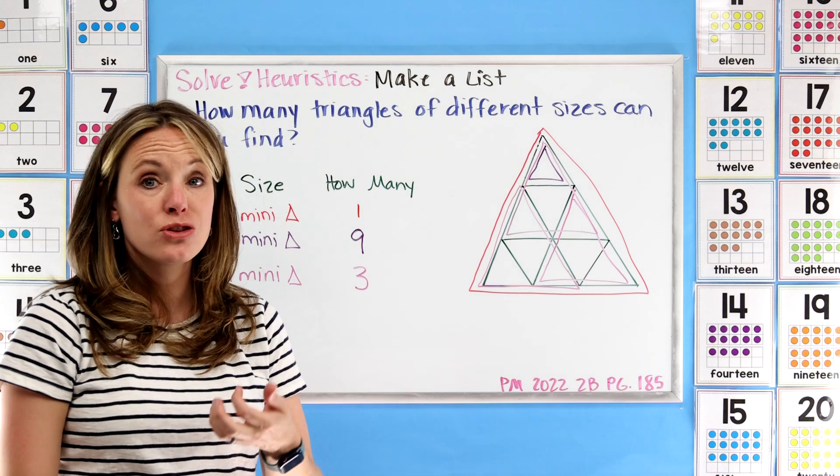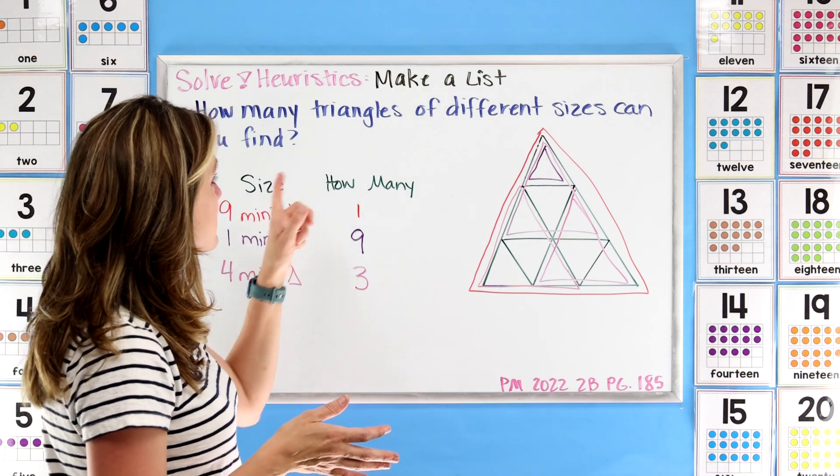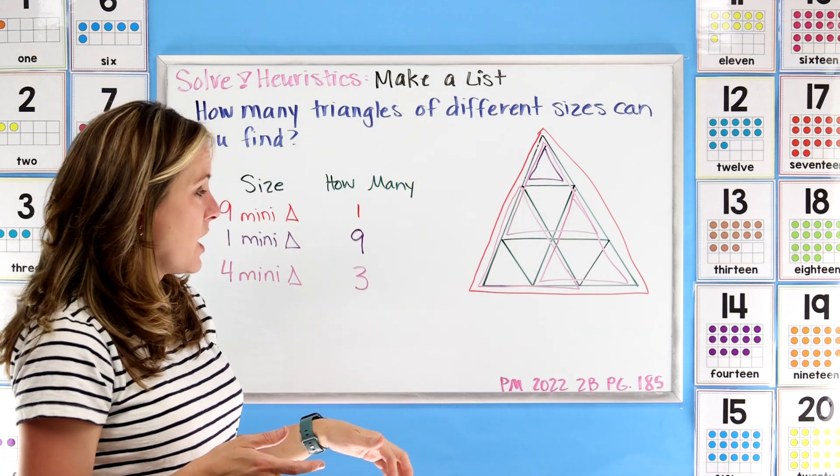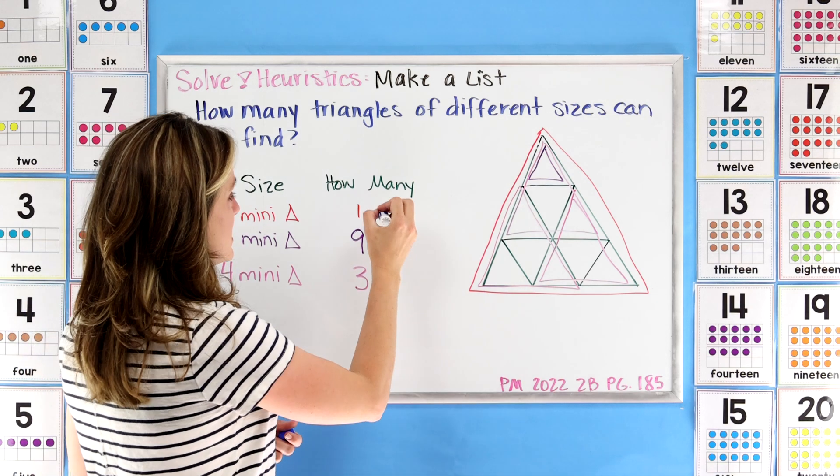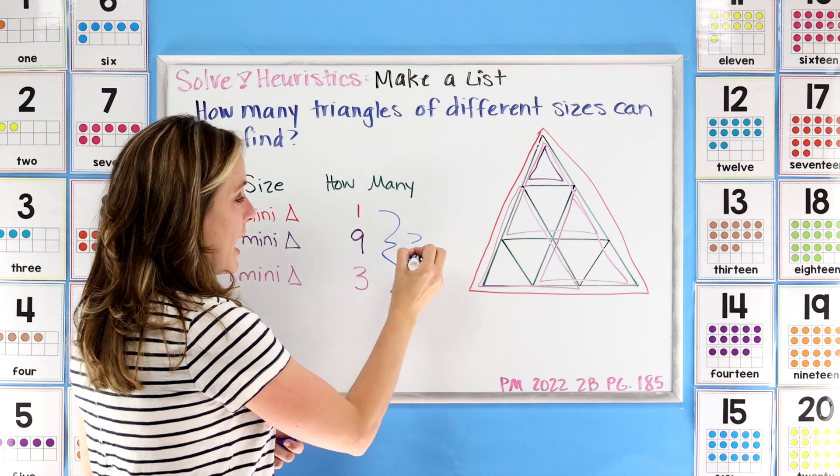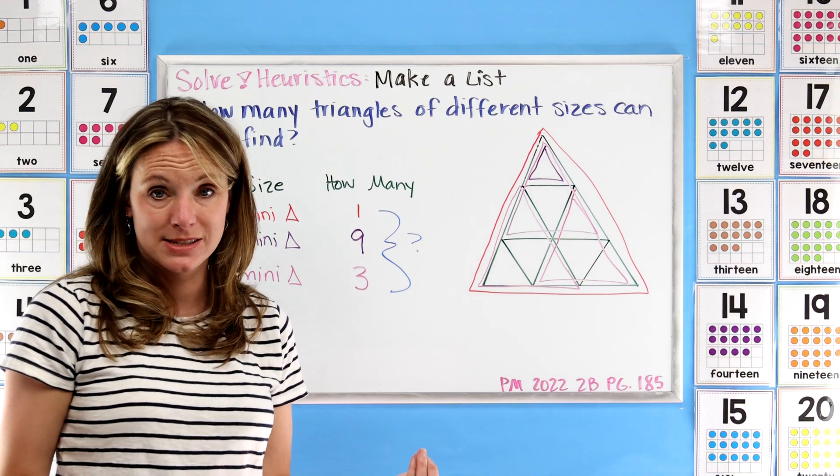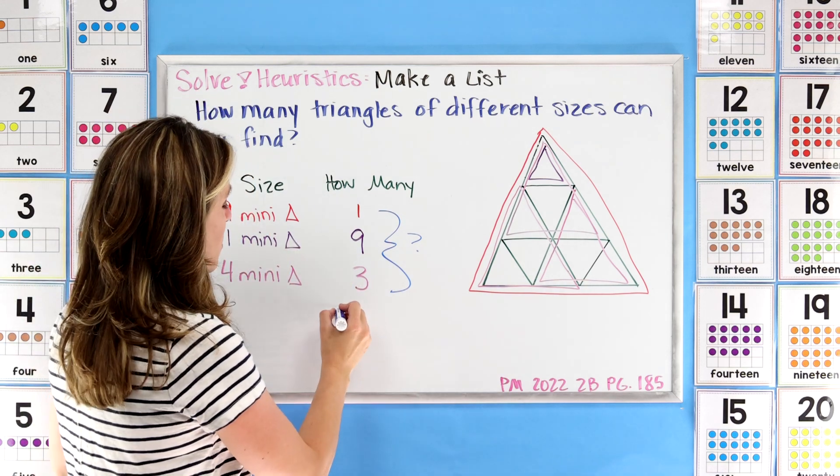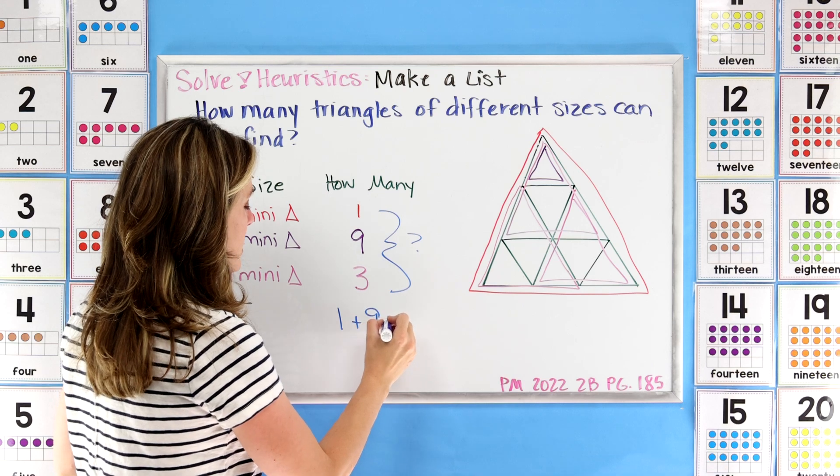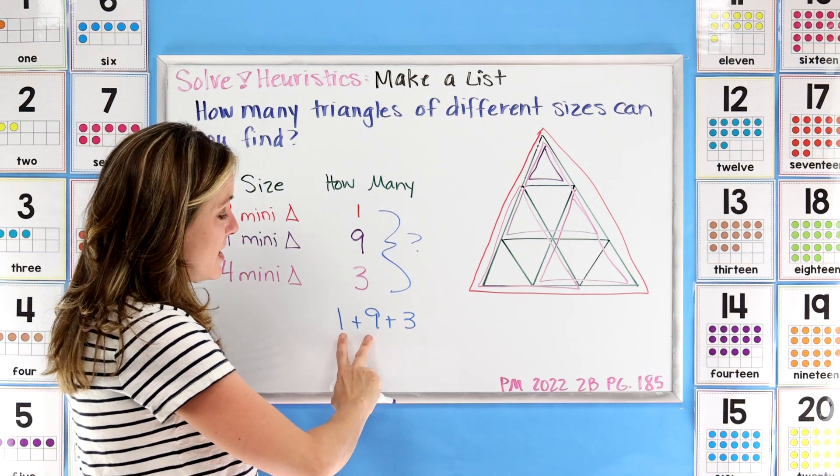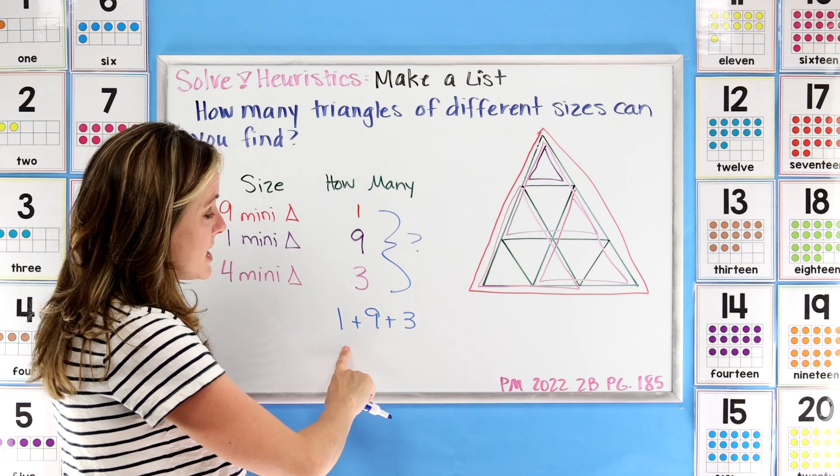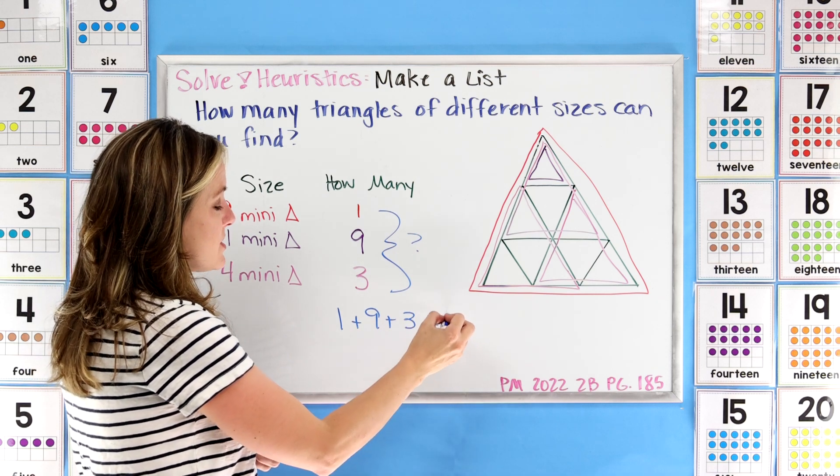So now if I wanted to find the total number of triangles of different sizes that I can find, how am I going to figure this out? What can we do? We've got all of these here and we need to find how many in all. What operation is that? One plus nine plus three. And I'm seeing some mental math here because I know this makes 10. 10 and three more is 13.